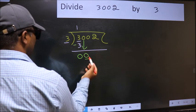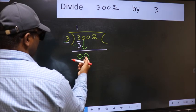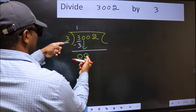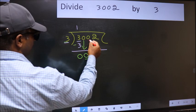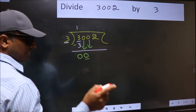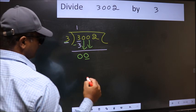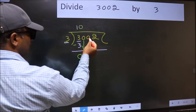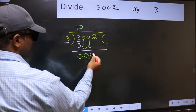Now here we have 0 and here 3. 0 is smaller than 3, so we should bring down the second number. And the rule to bring down the second number is we should put 0 here. Then only we can bring down the second number.